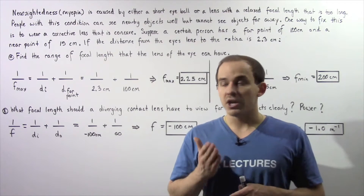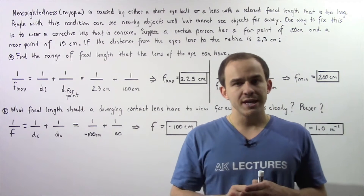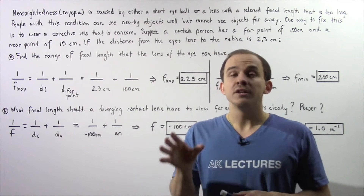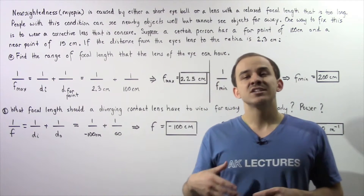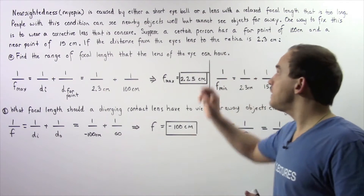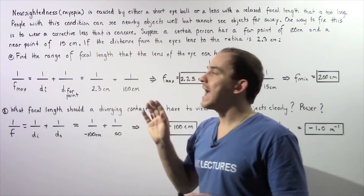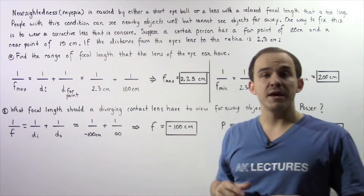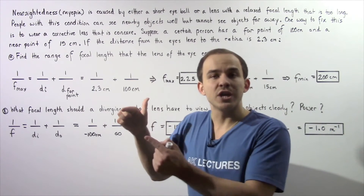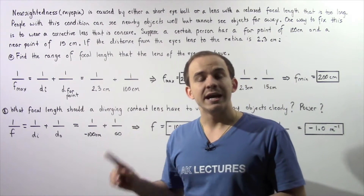Nearsightedness or myopia can be caused by either one of two things: either the eyeball is too short, or the lens of the eye has a relaxed focal length that is simply too long. If either one of these conditions is satisfied, the person has myopia, which means rays of light entering the eye converge at a point found in front of the retina.